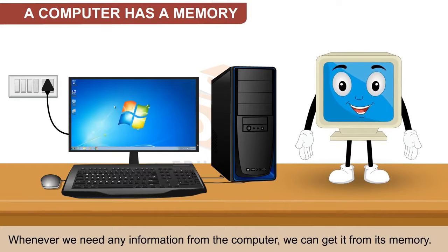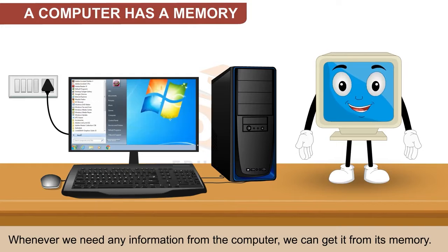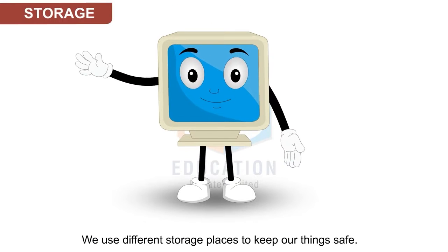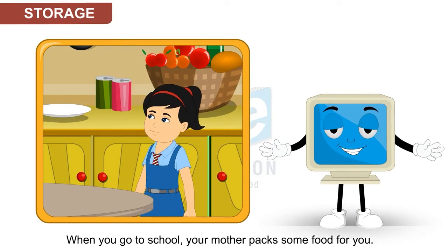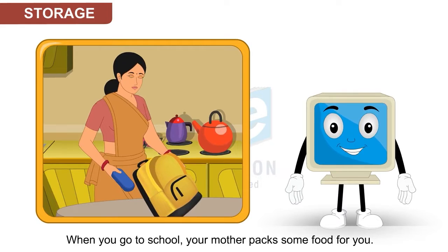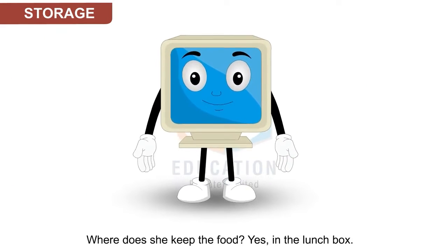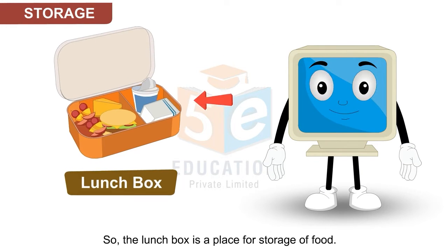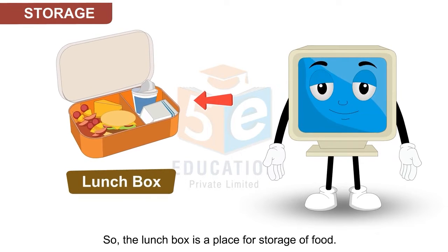Whenever we need any information from the computer, we can get it from its memory. We use different storage places to keep our things safe. When you go to school, your mother packs some food for you. Where does she keep the food? Yes, in the lunch box. So the lunch box is a place for storage of food.